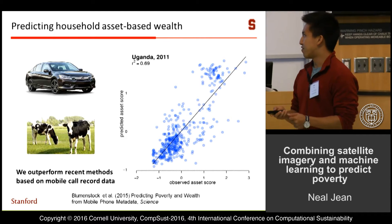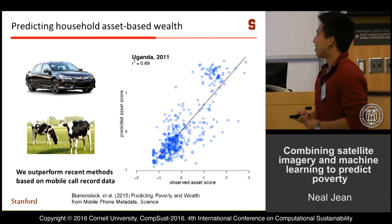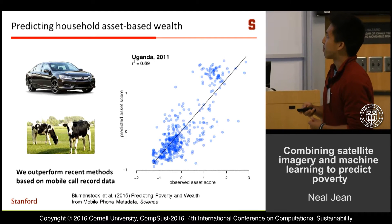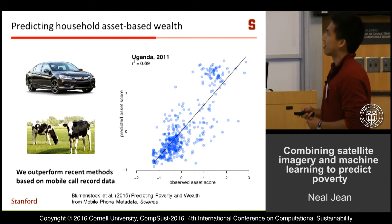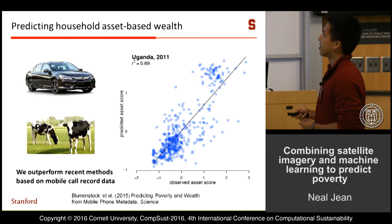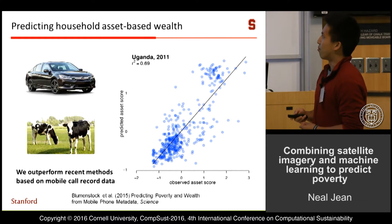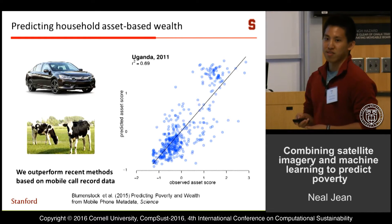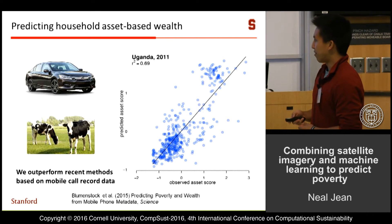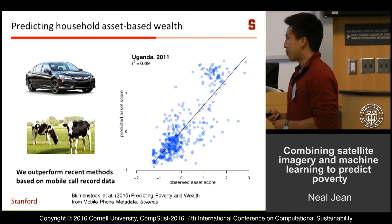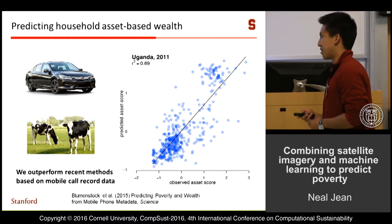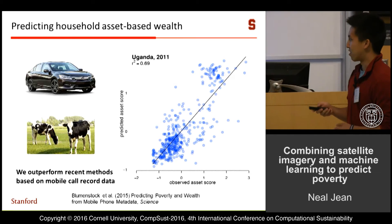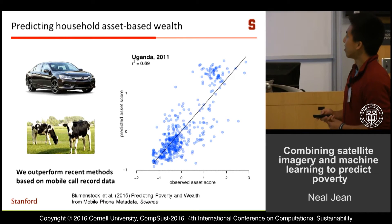We take the features we learn and apply them to the poverty prediction task. We're doing regression on an asset-based wealth index from the DHS surveys, and we find that we outperform some recent methods based on call record data that were published in Science last year.